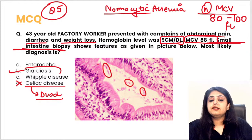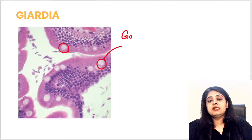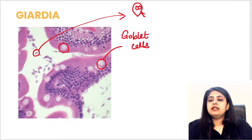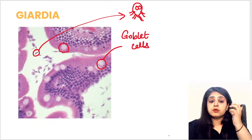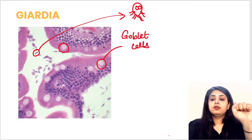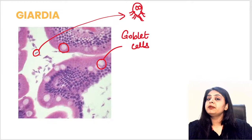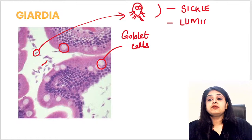Looking at the biopsy, there is an organism clearly visible. Celiac disease was a popular answer, but celiac disease is a genetic/gluten disorder — not caused by an organism. The organism here is Giardia lamblia. In a better picture you can see goblet cells confirming intestinal tissue, and the organism visible. In microbiology you see the front view — the angry old man appearance — but in the pathology slide you see the side view, which looks like a sickle.